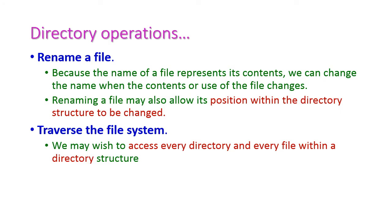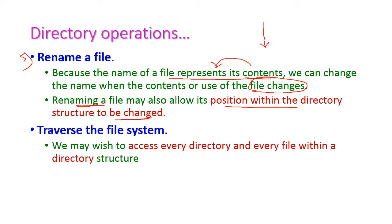Another important operation is rename the file. The file name represents its content, and if the purpose of the file changes then we must change the file name as well — this is allowed by directory operations. Note that renaming a file may change its position within the directory structure since files are arranged in alphabetical order. The final operation is traverse the file system, which allows us to access every directory and every file within the directory structure.